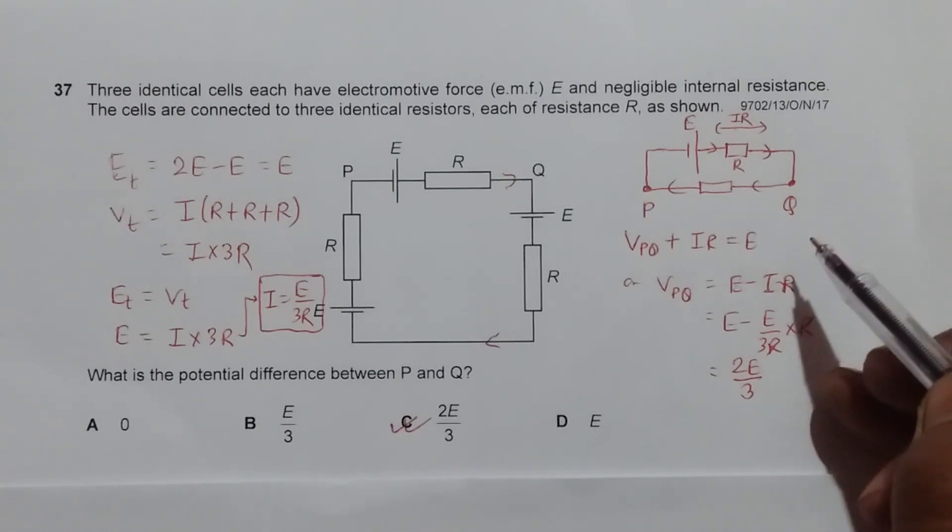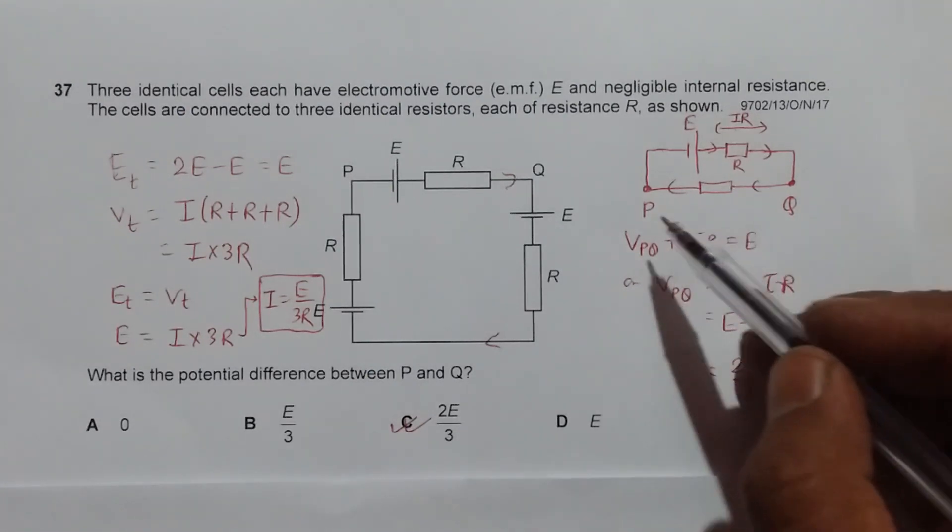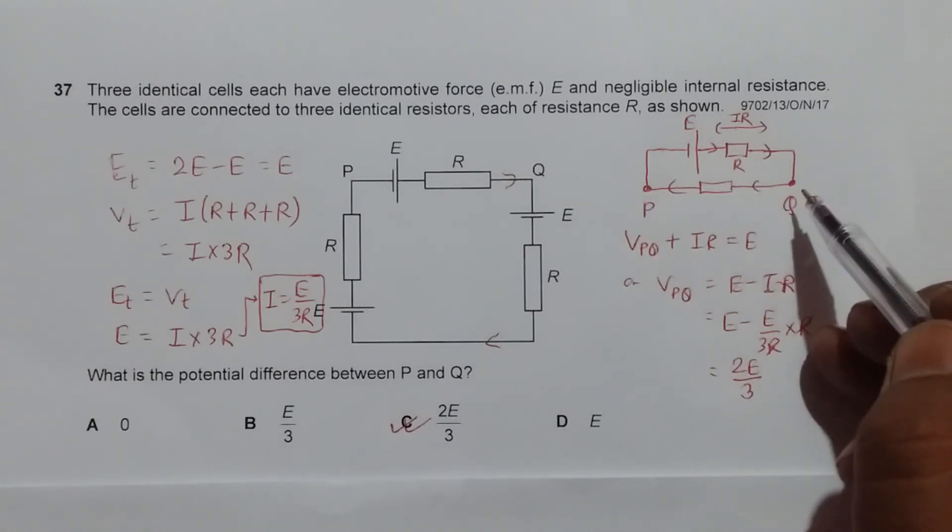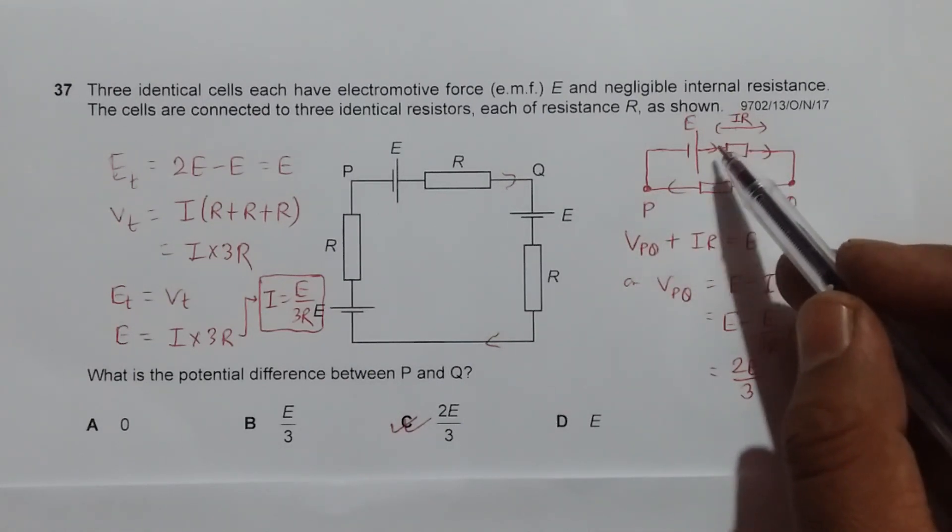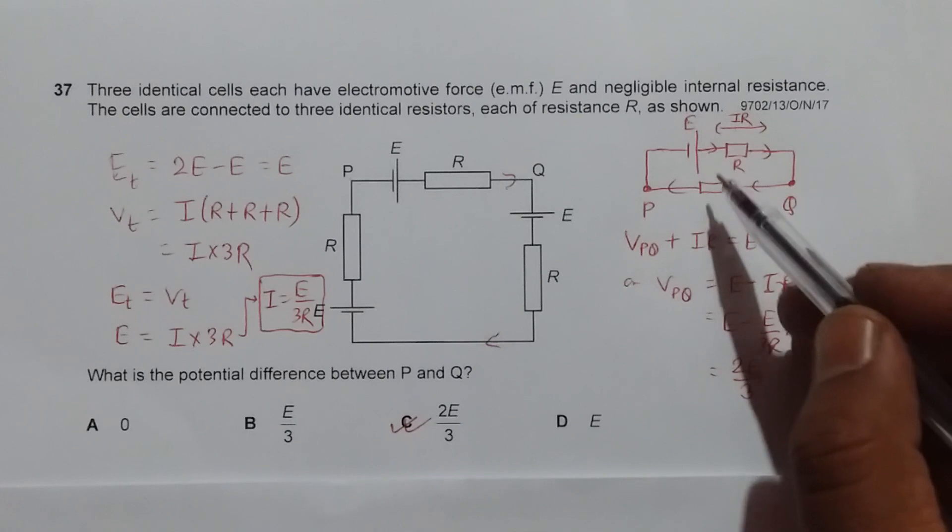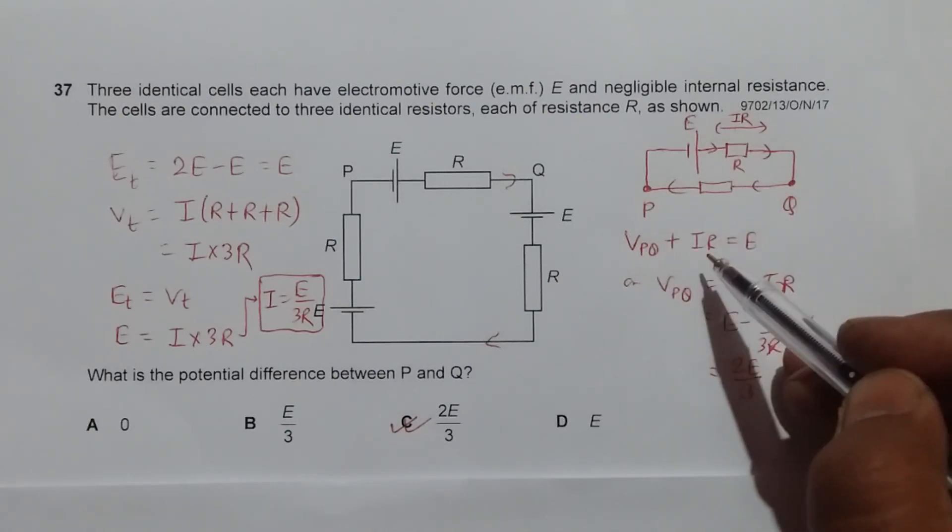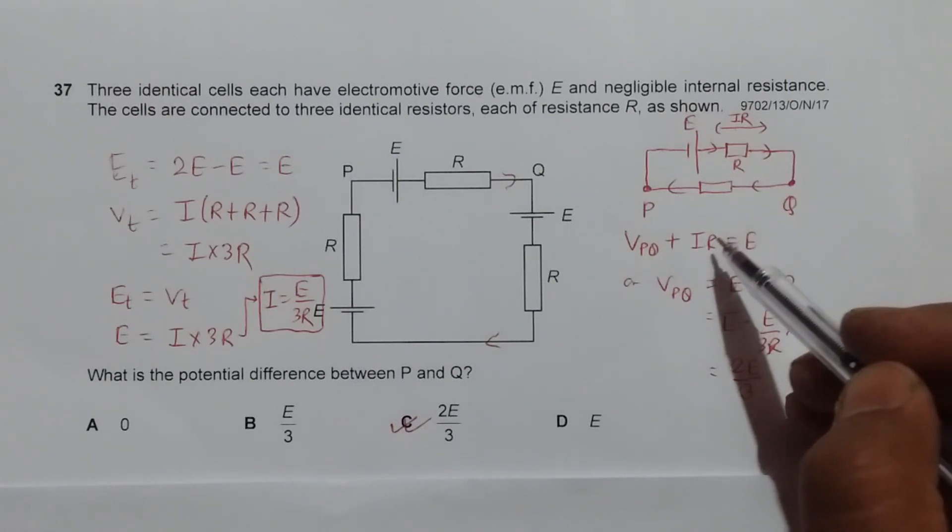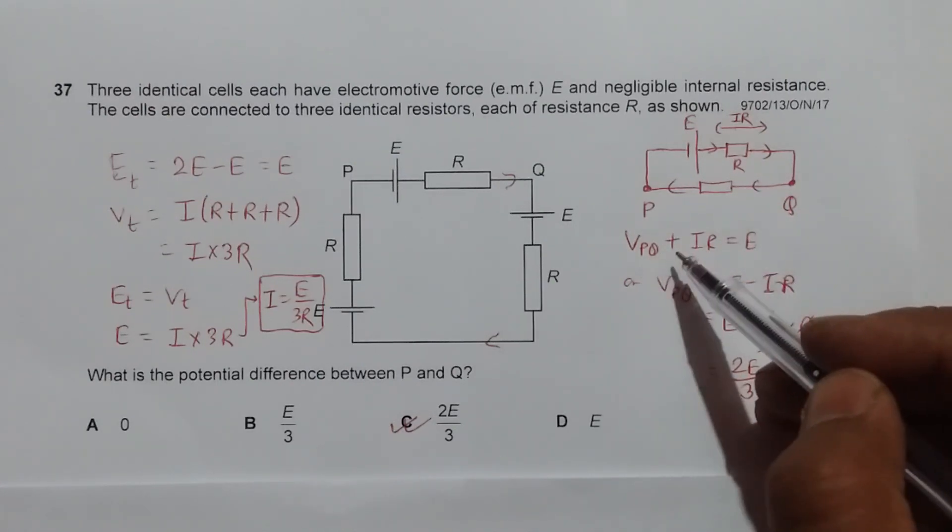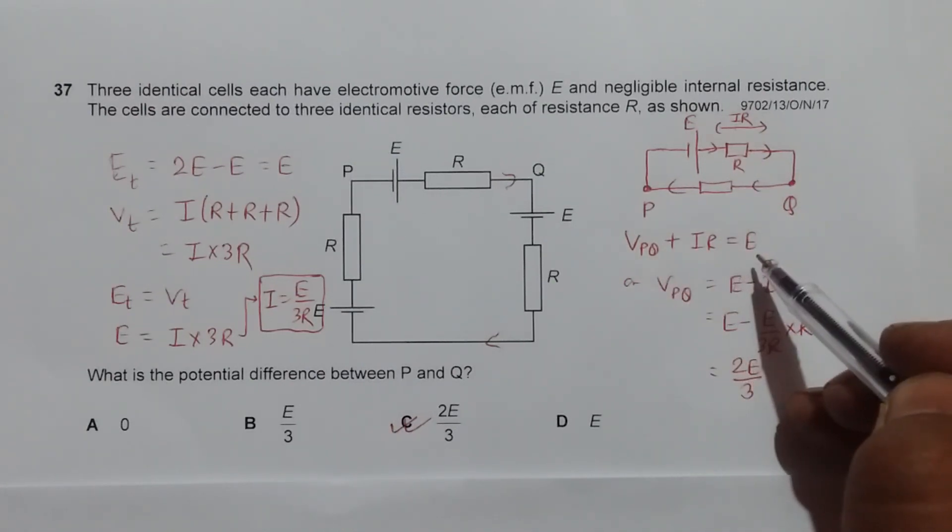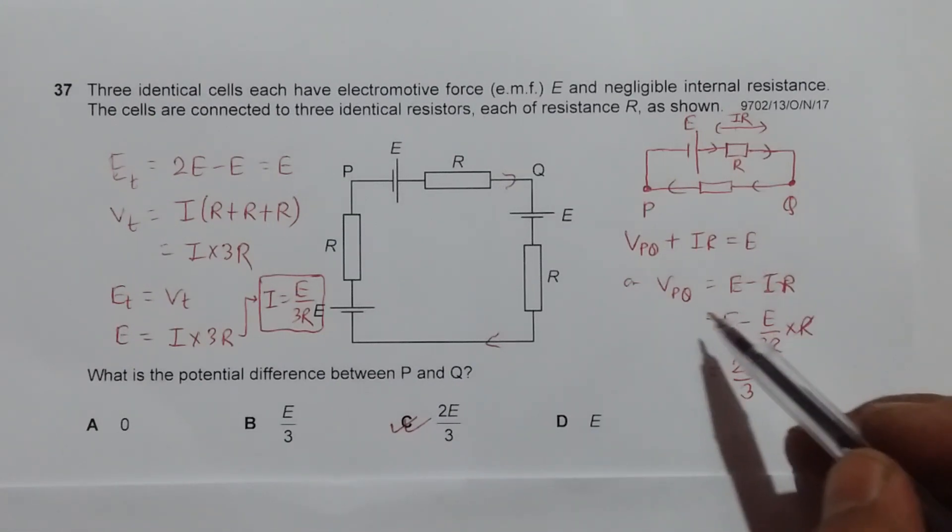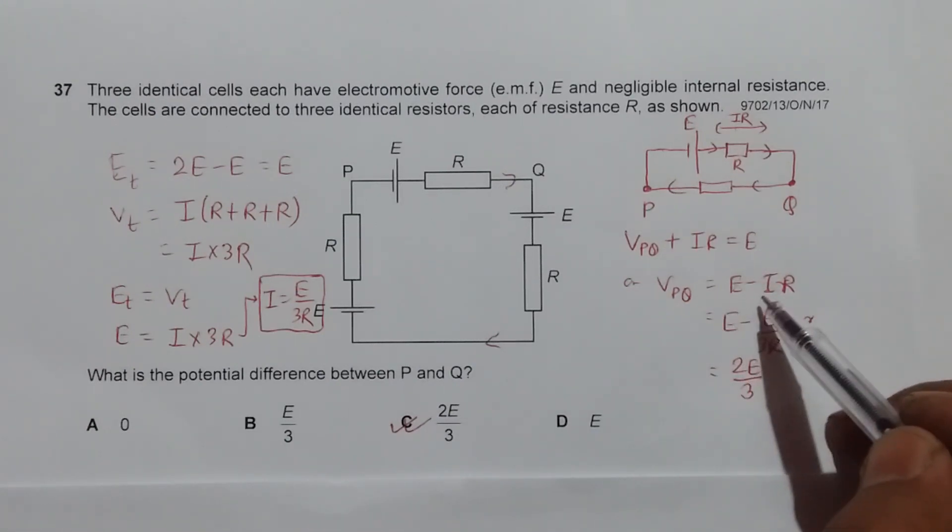Now if I apply Kirchhoff's law once again, the sum of PD here plus the sum of PD here will be equal to the EMF. So the PD here is VPQ and the PD here is I into R, so VPQ plus IR is equal to E. This gives me VPQ equal to E minus I into R.